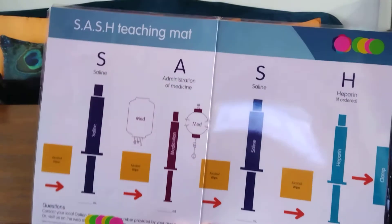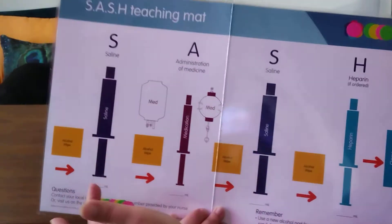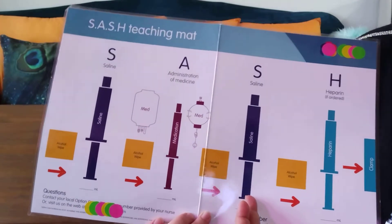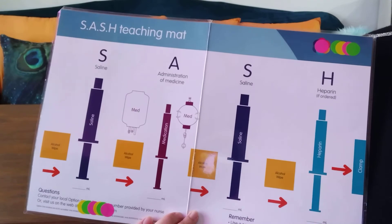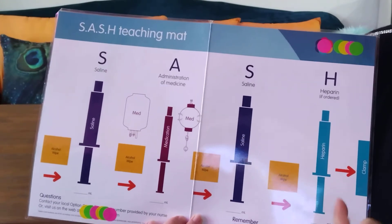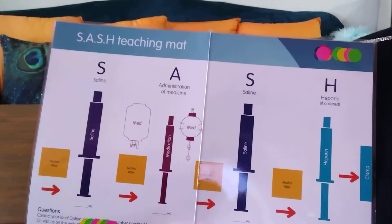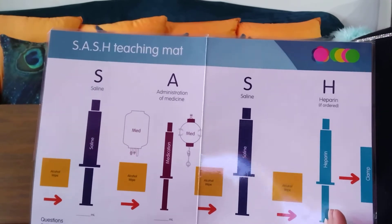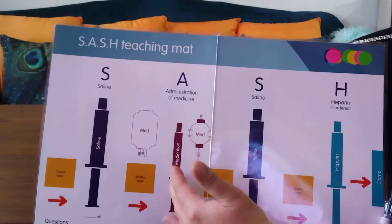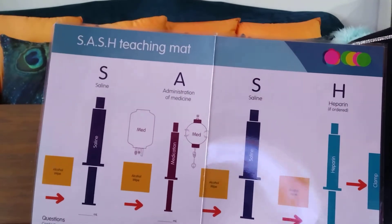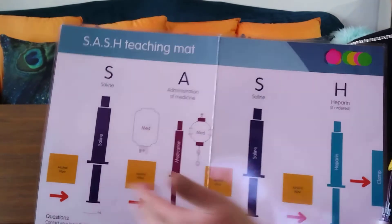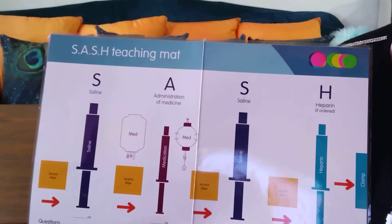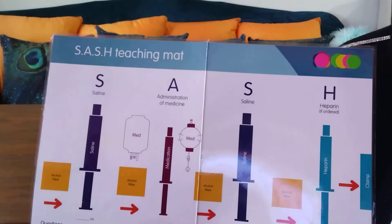Whenever you're going to do your IV med, you're always going to set it up like this: you're always going to start with a saline flush, then your medication, followed by another saline flush, and ending with a heparin. The reason you do this is that since your last infusion, the nurse put heparin into your line. Sometimes there can be a medication reaction with the heparin, so the saline acts as a shield between the medication and the heparin to protect you from any type of drug interaction.